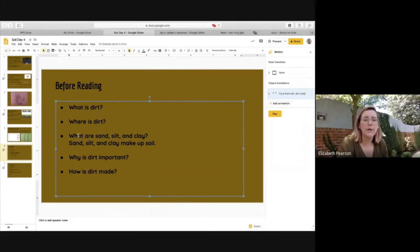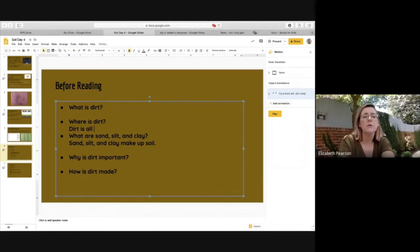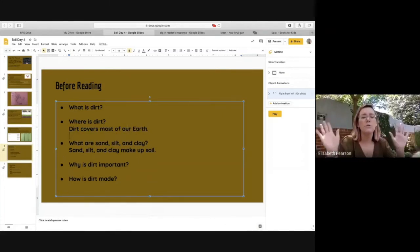Okay. Did we have any other answers to these questions? What is dirt? Where is dirt? Ooh, where was dirt? Do you remember the answer to that question? Where dirt is? It's all over the earth, right? It's all over the land. So dirt is all, or we can say dirt covers most of our earth and it was all over the land. So we have a lot of answers to our questions.